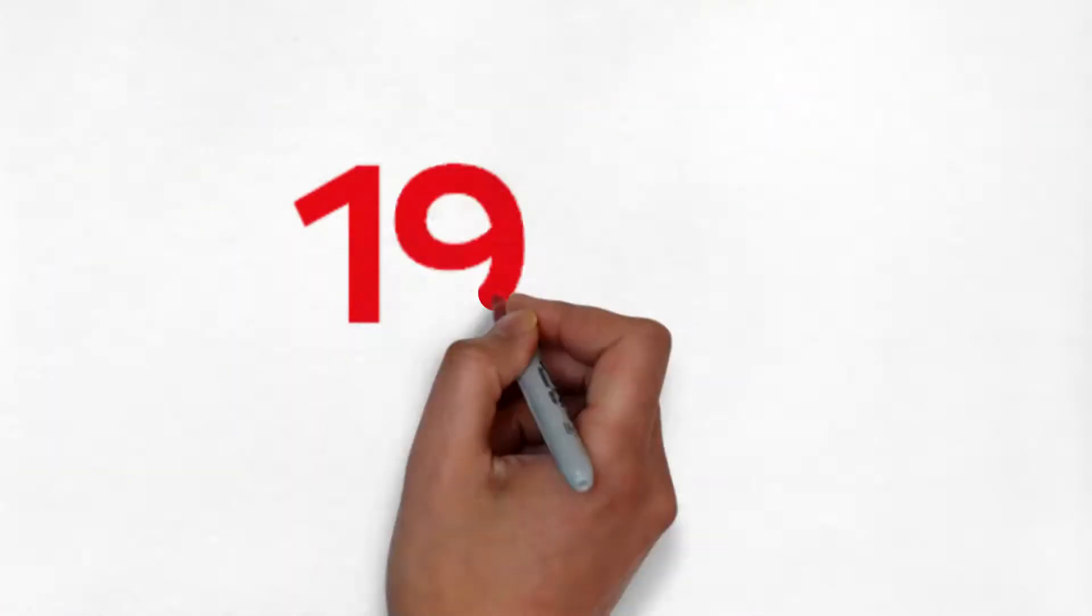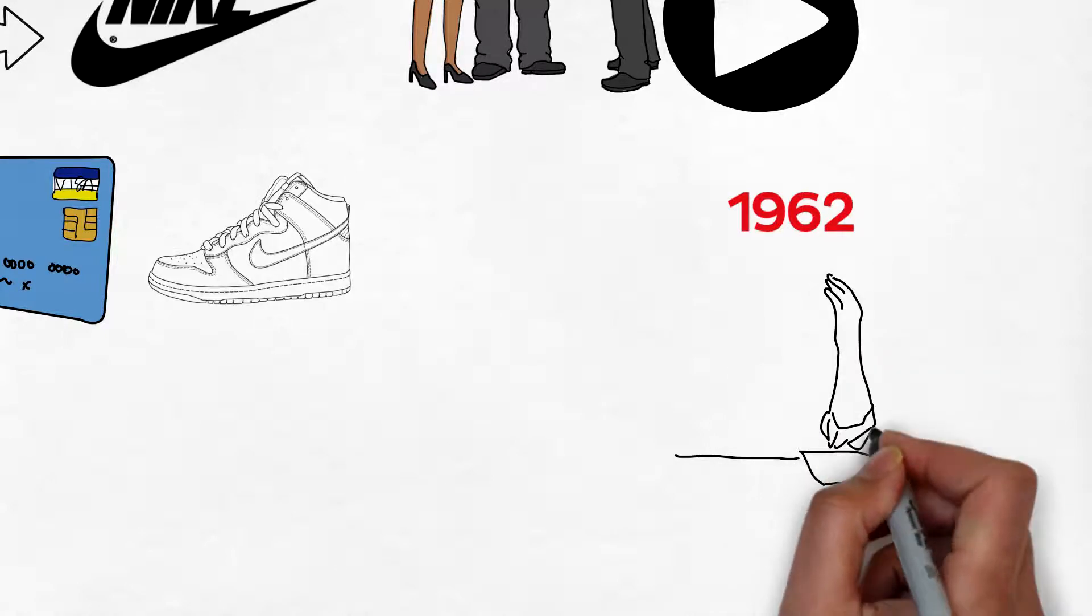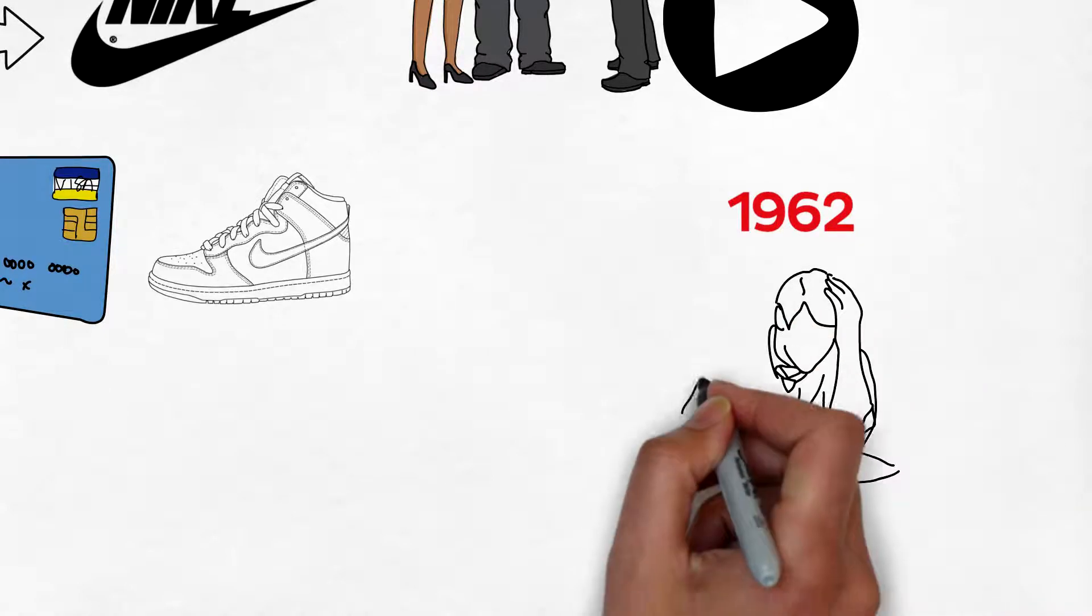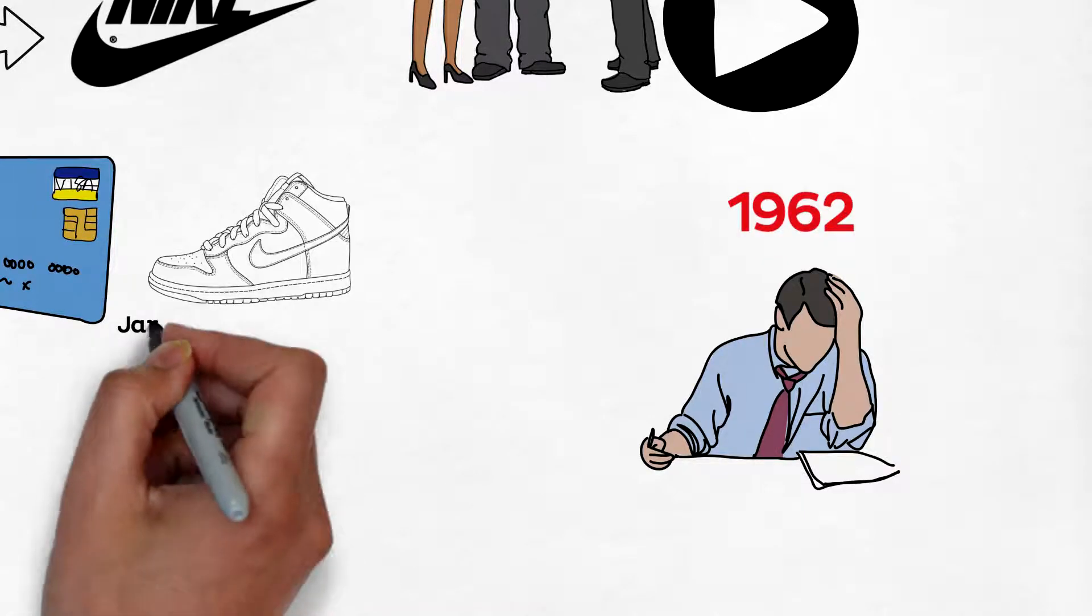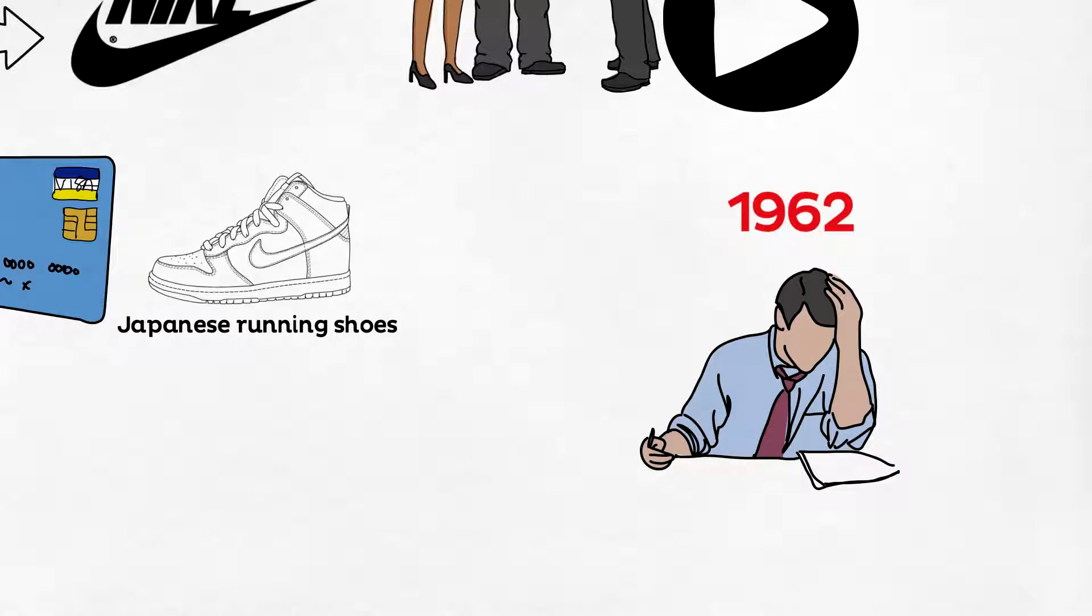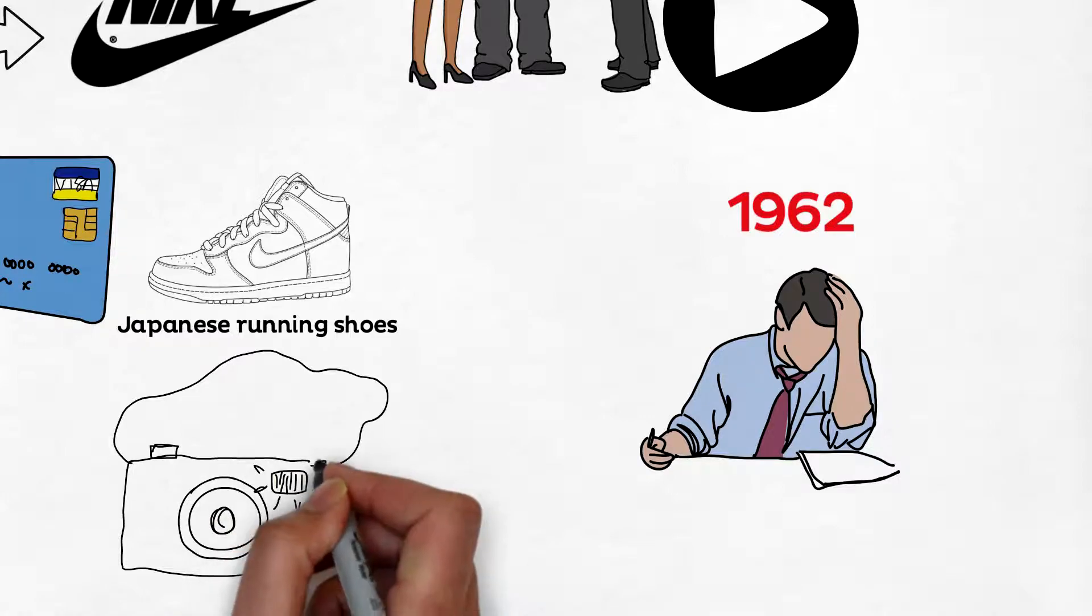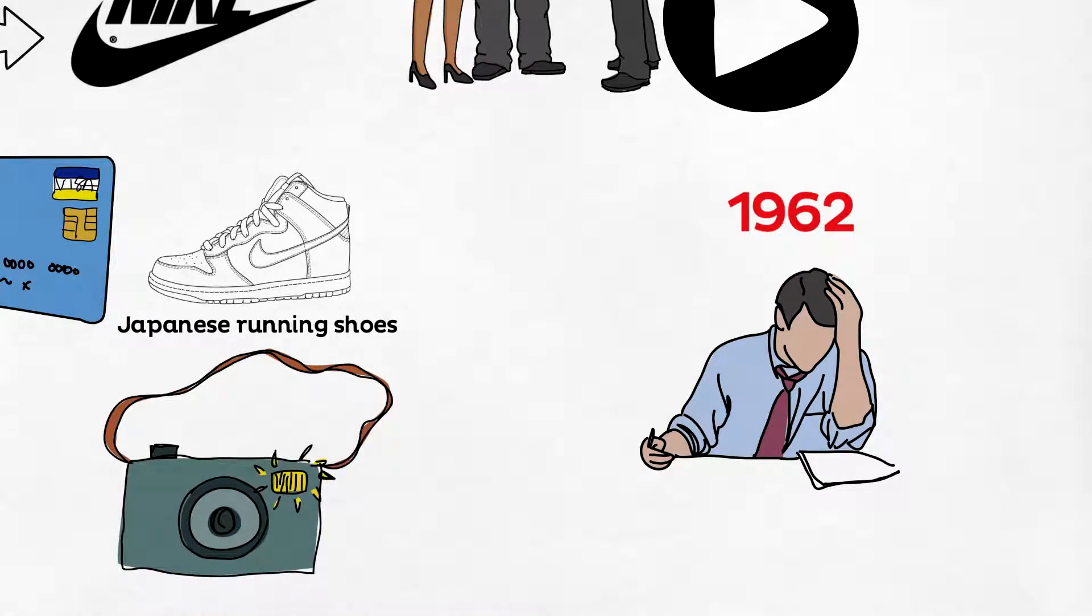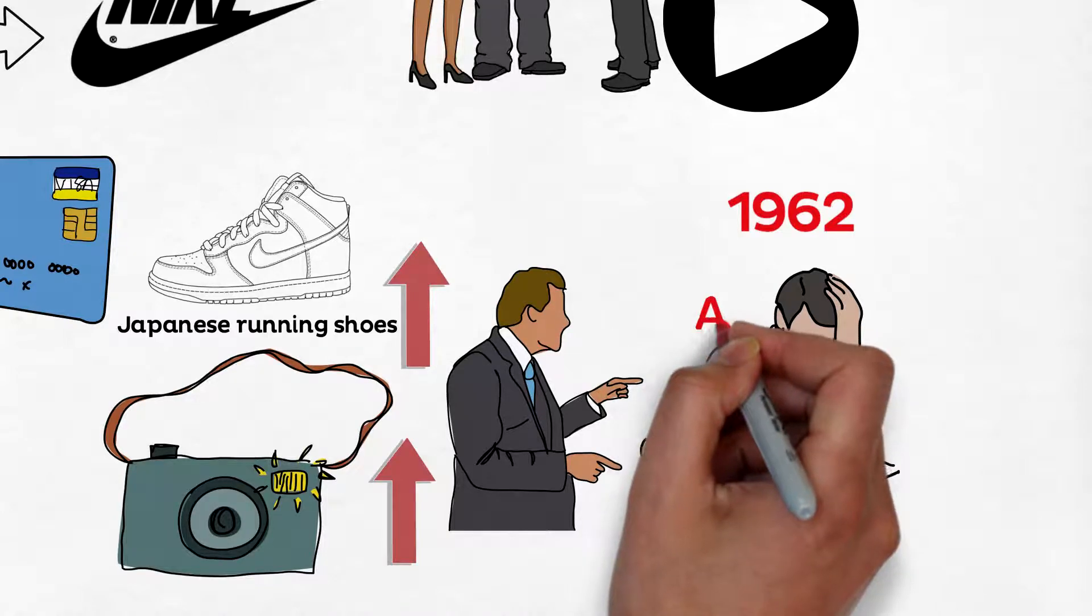It was in the year 1962. Phil was studying business and he jotted an idea to write about Japanese running shoes. In fact, his paper was merely a business plan for starting a company by selling Japanese running shoes. Back in those times, Japanese cameras made a huge entry which was initially dominated by the German market. Phil had a feeling that the Japanese shoes would do the same. His professor thought that his crazy idea had merit. He gave him an A.